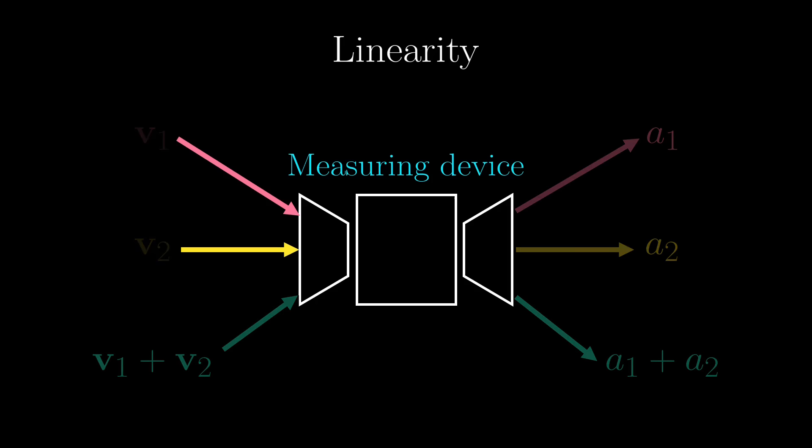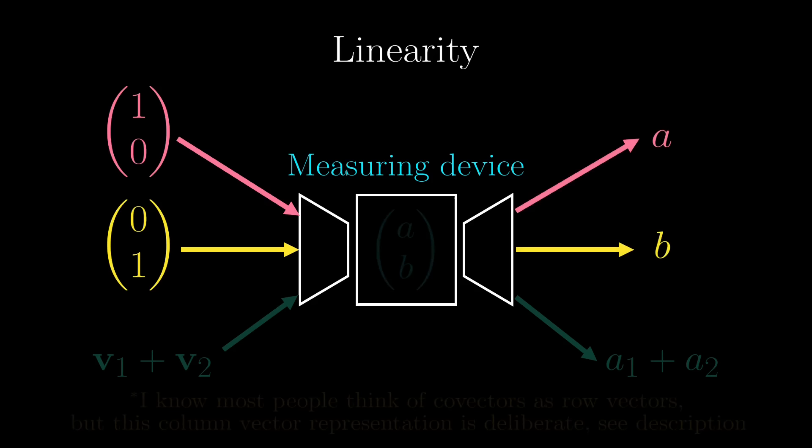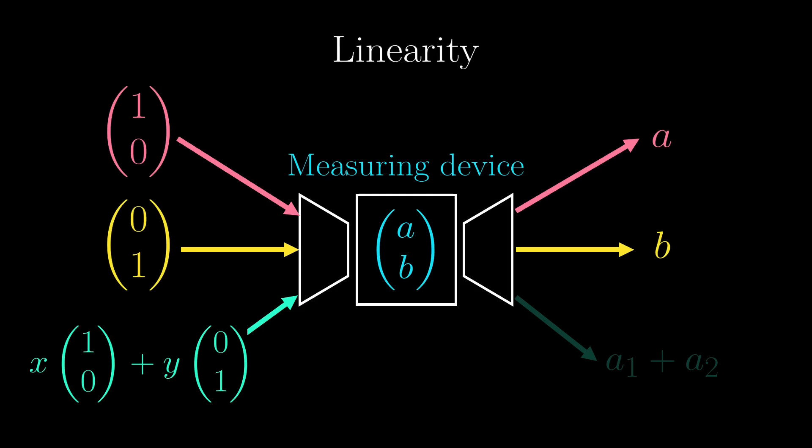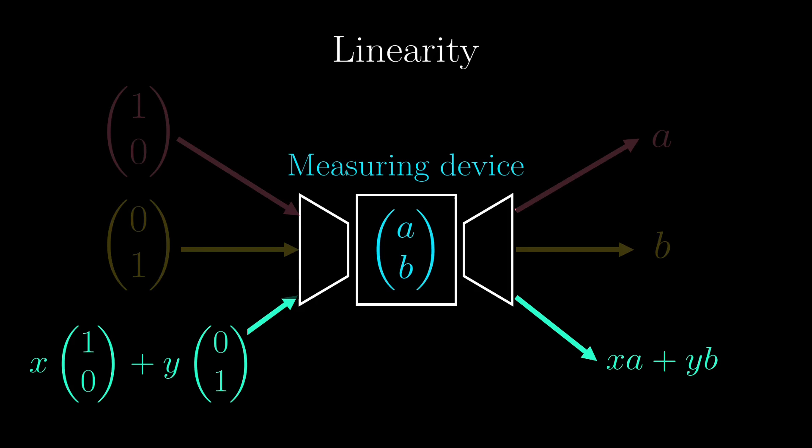Covectors are linear, so just like our linear transformations, in the two-dimensional case it suffices to know what the vectors (1,0) and (0,1) are measured to be. If the measurements are A and B respectively, let's call this an AB covector. Now if you take any vector (x,y) — which is just x times (1,0) plus y times (0,1) — just by linearity it will be measured as x times A plus y times B. So in the two-dimensional case, an AB covector measures the vector (x,y) to be xA plus yB.